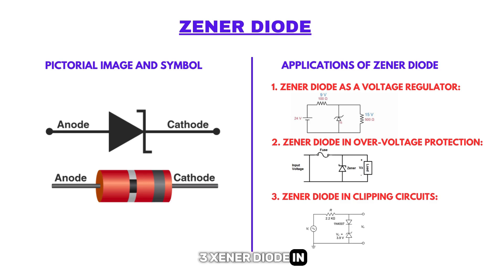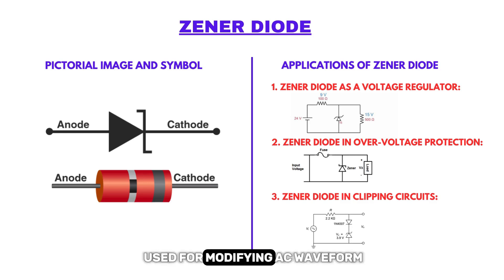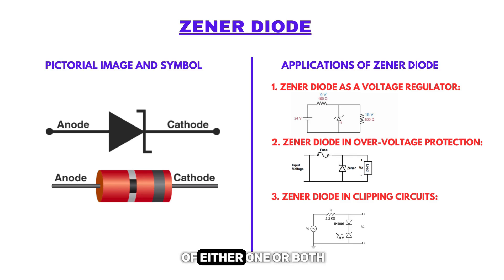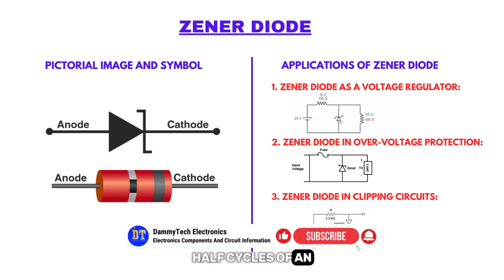Zener diode in clipping circuits: the Zener diode is used for modifying AC waveforms in clipping circuits by limiting parts of either one or both half cycles of an AC waveform.